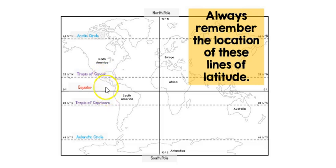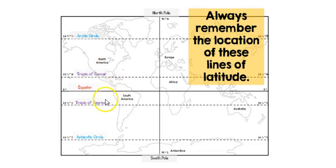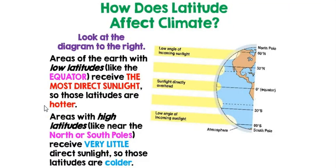The Tropic of Capricorn — or 'corn' — is thought of as less important, so it goes to the south. That's a way to remember the difference between the Tropic of Cancer and the Tropic of Capricorn. Now, how does latitude affect climate?